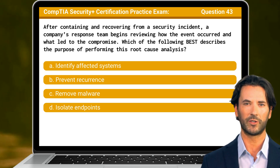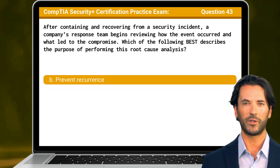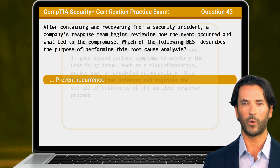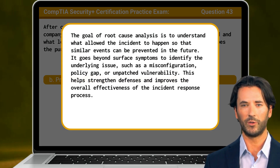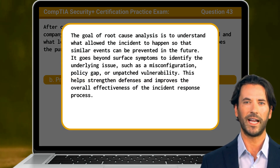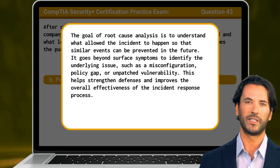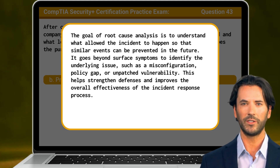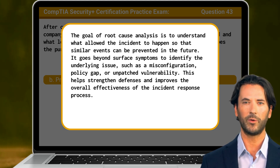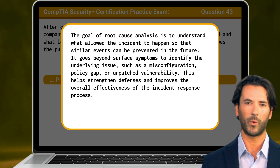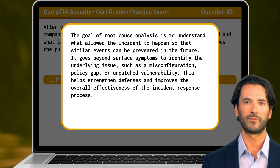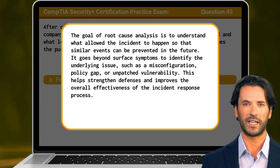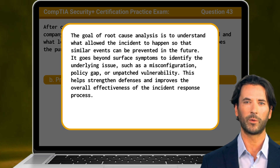The answer is B. Prevent recurrence. The goal of root cause analysis is to understand what allowed the incident to happen so that similar events can be prevented in the future. It goes beyond surface symptoms to identify the underlying issue, such as a misconfiguration, policy gap, or unpatched vulnerability. This helps strengthen defenses and improves the overall effectiveness of the incident response process.